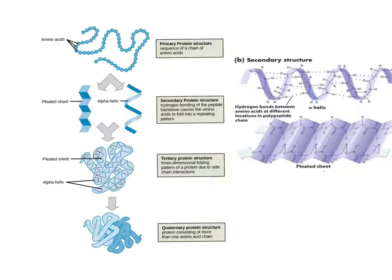Quaternary structure is when two completely separate proteins come together. The amino acid side chains are going to make interactions from one protein to another — hydrogen bonds, van der Waals interactions, nonpolar hydrophobic interactions, and disulfide bridges — those hold two separate proteins together. So tertiary and quaternary are very similar, but tertiary is folding within one protein, and quaternary is interactions between two different proteins or more. Sometimes you can have several proteins that interact together for quaternary structure.